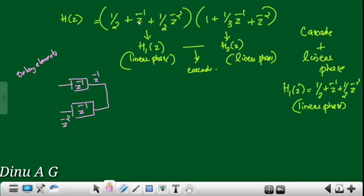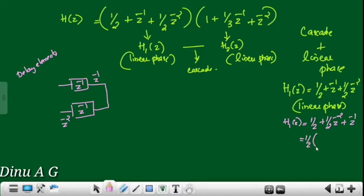H1(z) will be equal to 1/2, using the linear phase layer with symmetry — we multiply by symmetry. So: 1/2 into 1 plus z raised to minus 2, plus z raised to minus 1. This is our H1 offset, implemented in the linear phase structure.